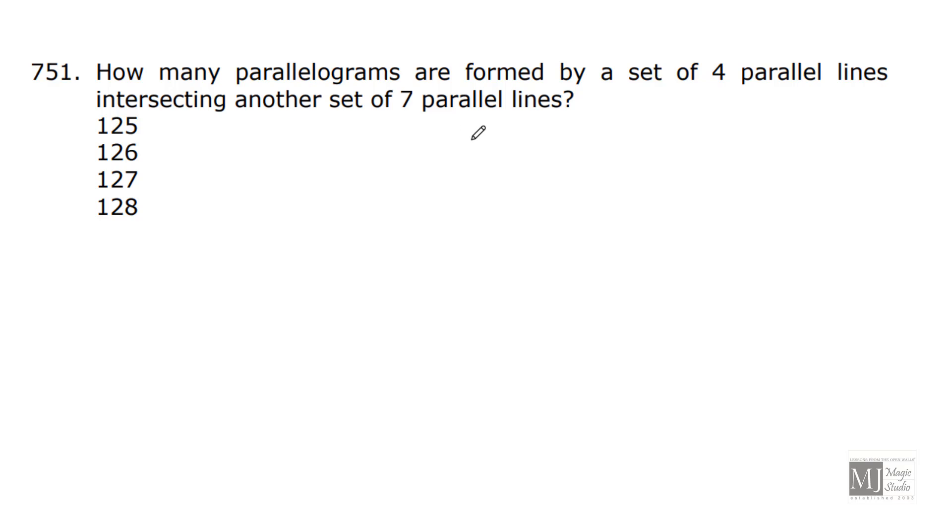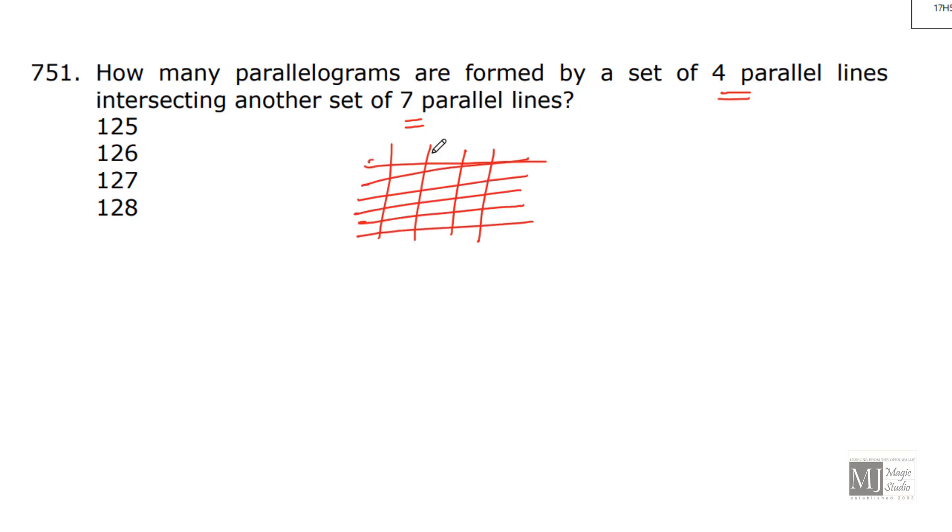How many parallelograms are formed by a set of four parallel lines intersecting another set of seven parallel lines? So, to form a parallelogram, we need two parallel lines on one set and another choice of two parallel lines on another set. That means, I need to choose two from four and two from these seven parallel lines. So, the number of parallelograms that can be formed is simply 4C2 × 7C2. 4C2 is 6, 7C2 is 21. 21 × 6 is 126. Option B.